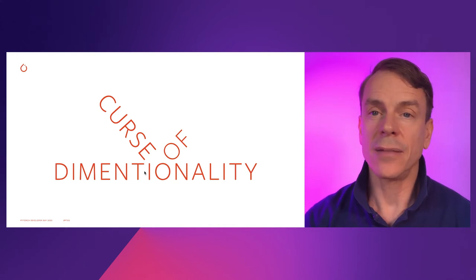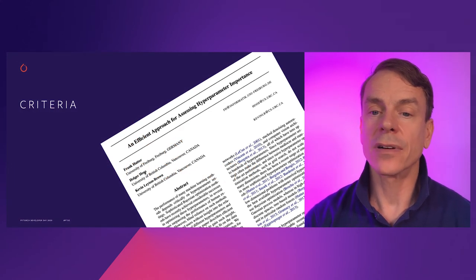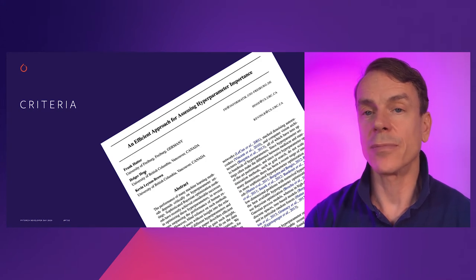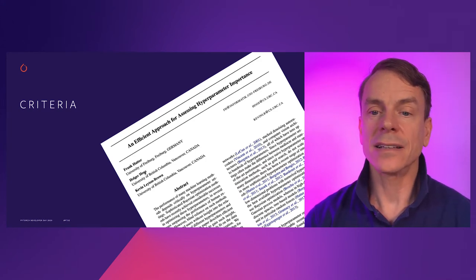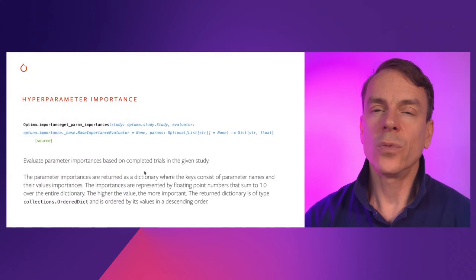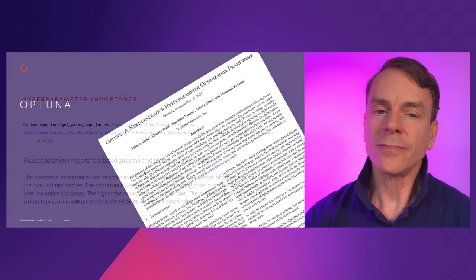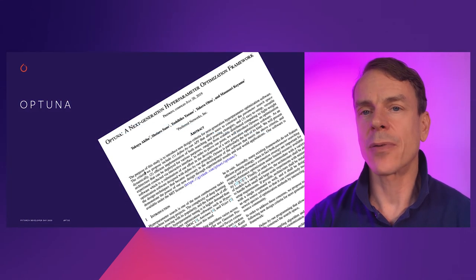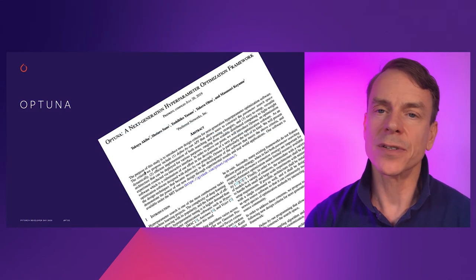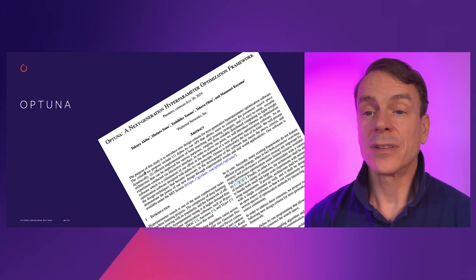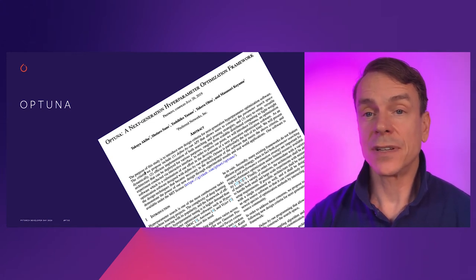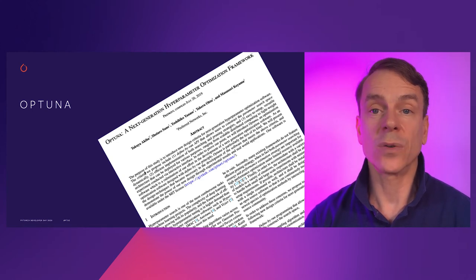So in order to combat this, we took a look at it in a paper for the efficient approach for assessing hyperparameter importance. And hyperparameter importance is basically a way that you can take a look and find out which of the hyperparameters it is that makes the most difference to the overall performance of your algorithms. Taking a look at this, we then implemented this hyperparameter importance into the Optuna framework, which we believe is the next generation hyperparameter optimization framework. Because it allows you to not only optimize your hyperparameters, but using hyperparameter importance can help you to select the most important ones to work with.